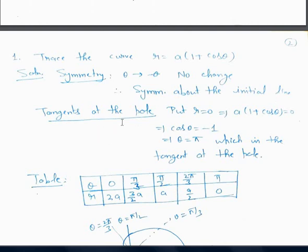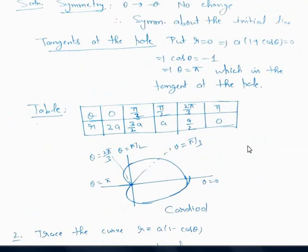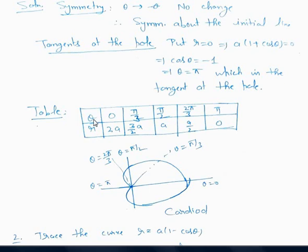The second step is to find tangents at the pole. We put R equal to 0, so A(1 + cos theta) = 0, which means cos theta equals minus 1, giving theta equals pi. This is the tangent at the pole. For the third step, we form a table. Because the curve is symmetrical about the initial line, we take values of theta from 0 to pi only.